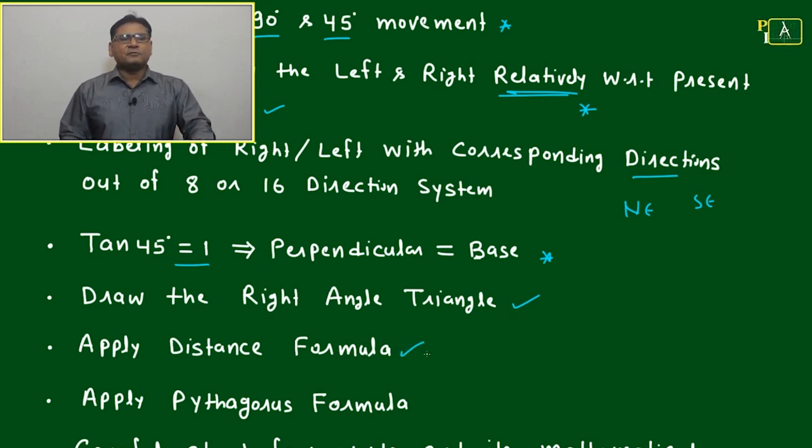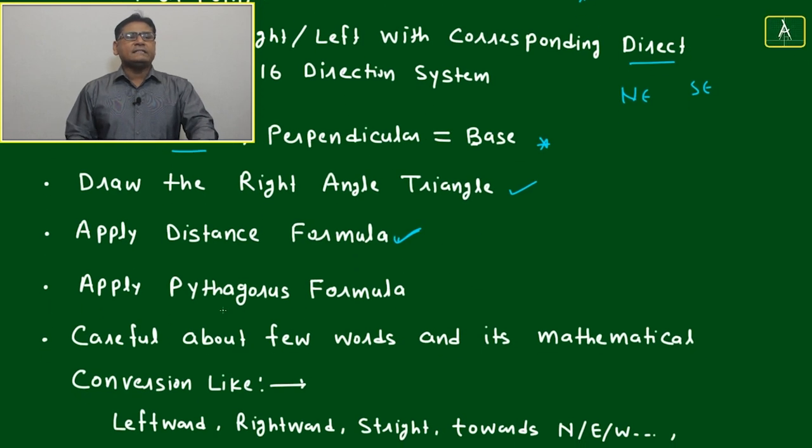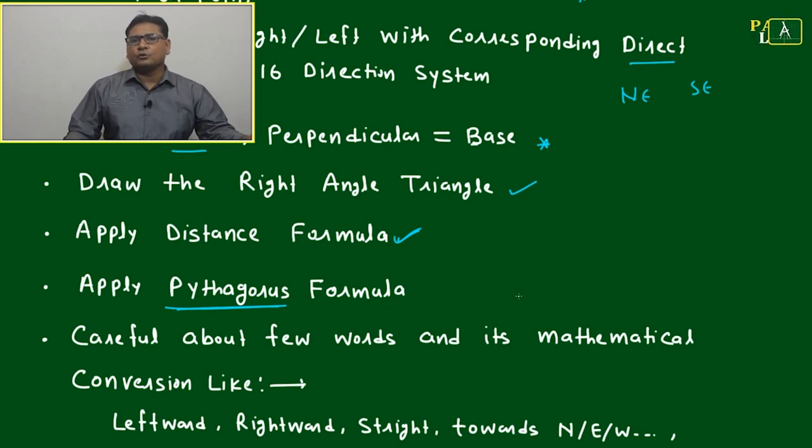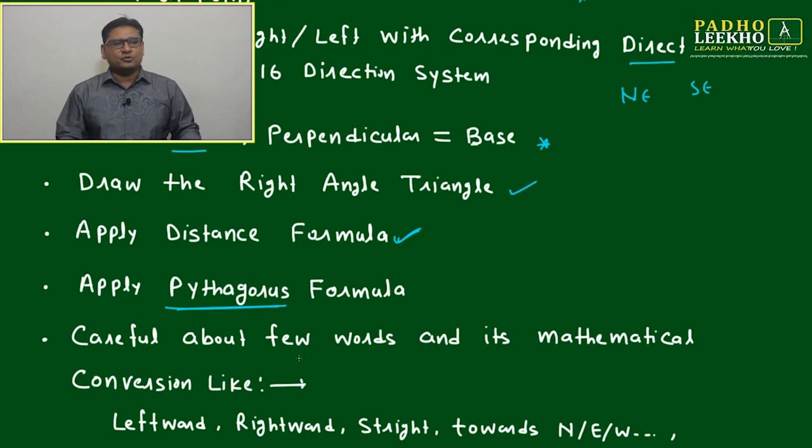Apply the distance formula of coordinate geometry, or more easily, you can apply Pythagoras formula - that is hypotenuse square equals base square plus perpendicular square.